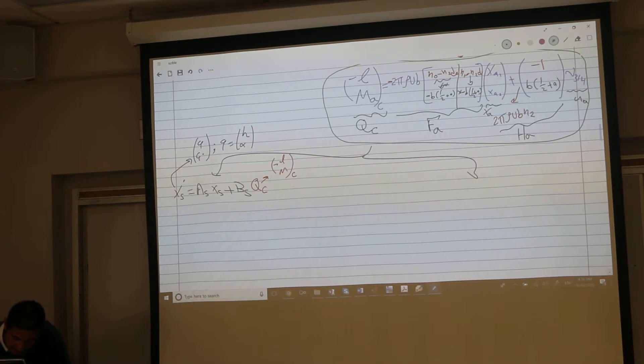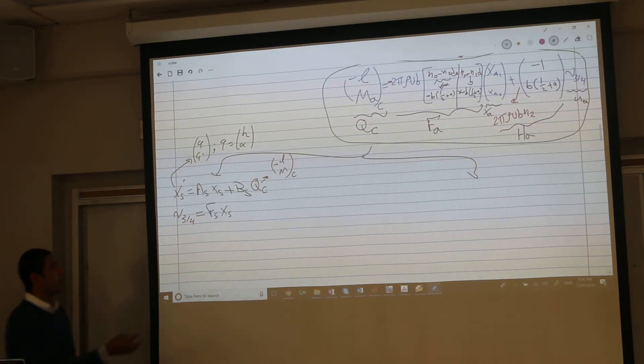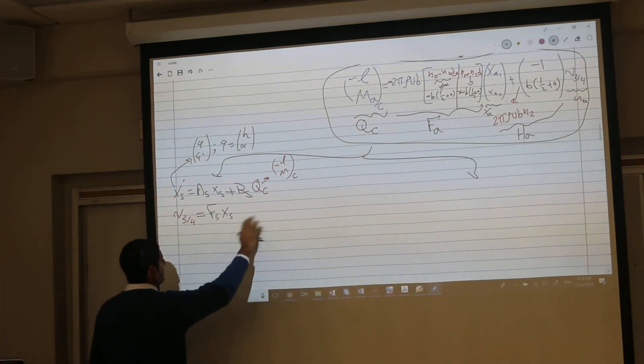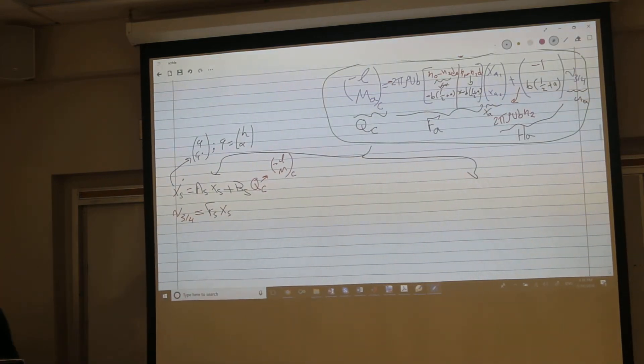The output equation is the output was the v3 quarter to be fed to the aerodynamic load. This is f structure times x structure, supposed to be plus h structure times the input, but there is no h. We did not find any h here.